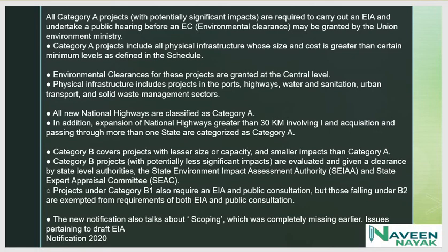Category B covers projects with lesser size or capacity and smaller impacts than Category A. Category B projects are evaluated and given clearance by the state government, i.e., state-level authority. Category A permission is given by the central government and Category B permission is given by the state government. The State Environment Impact Assessment Authority and State Expert Appraisal Committee handle these. Projects under B1 also require an EIA and public consultation, but those falling under B2 are exempted from both EIA and public consultation requirements.